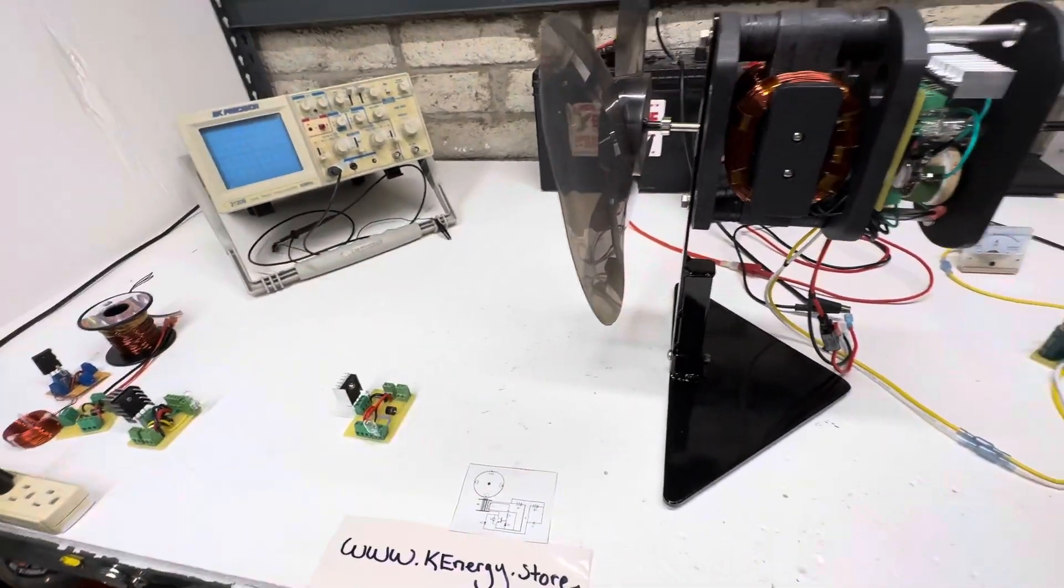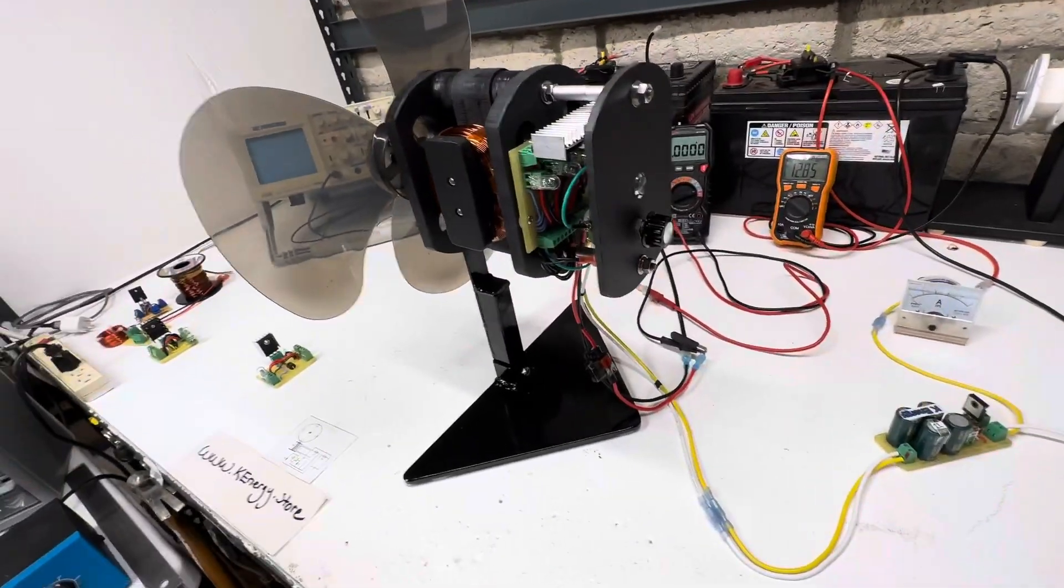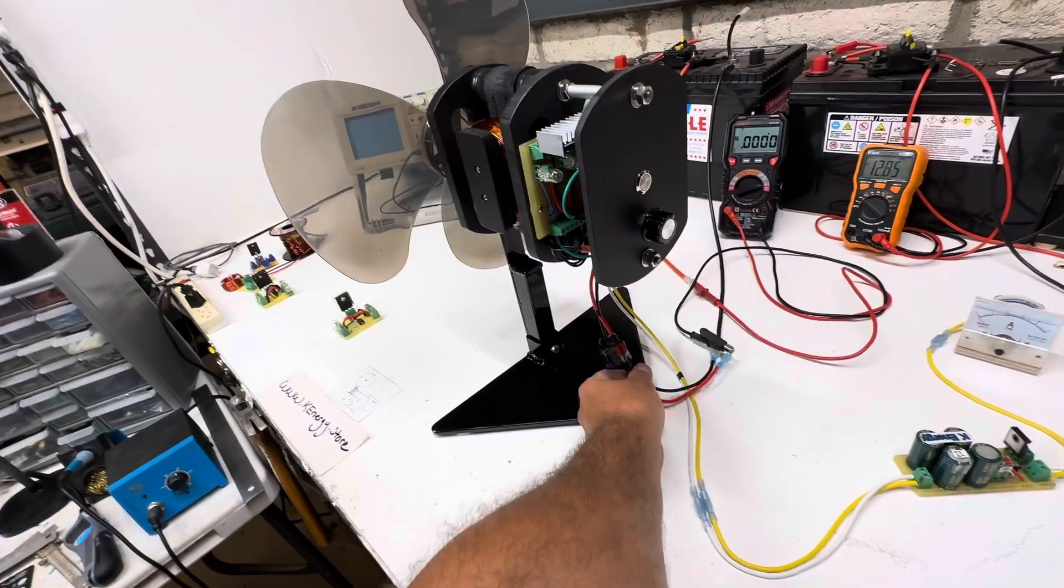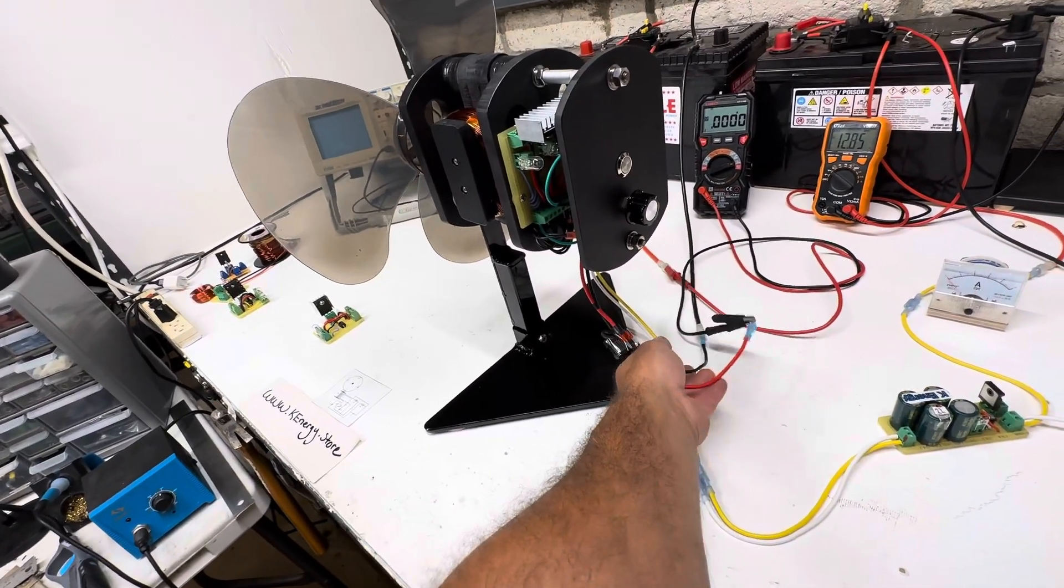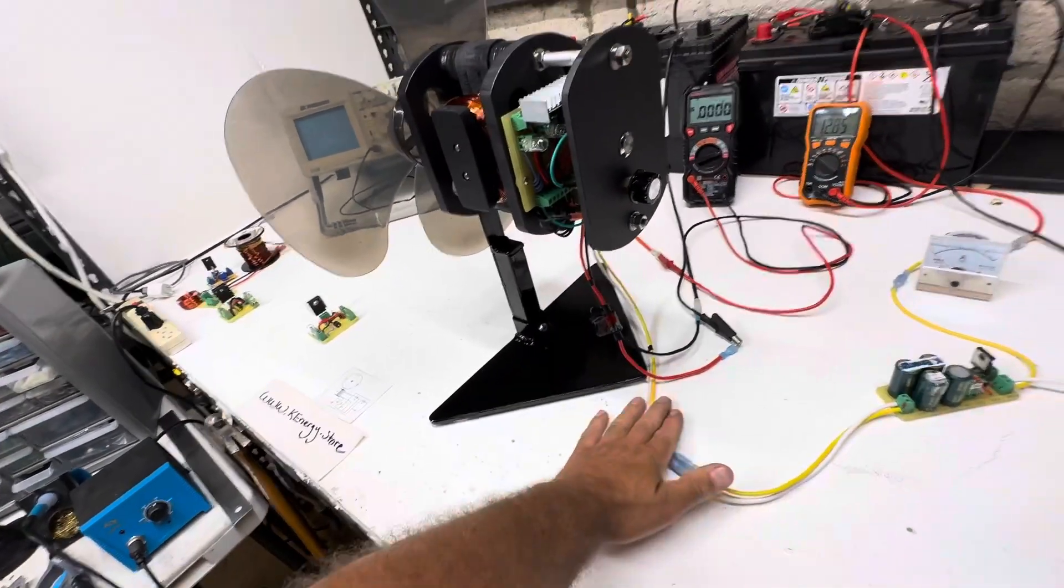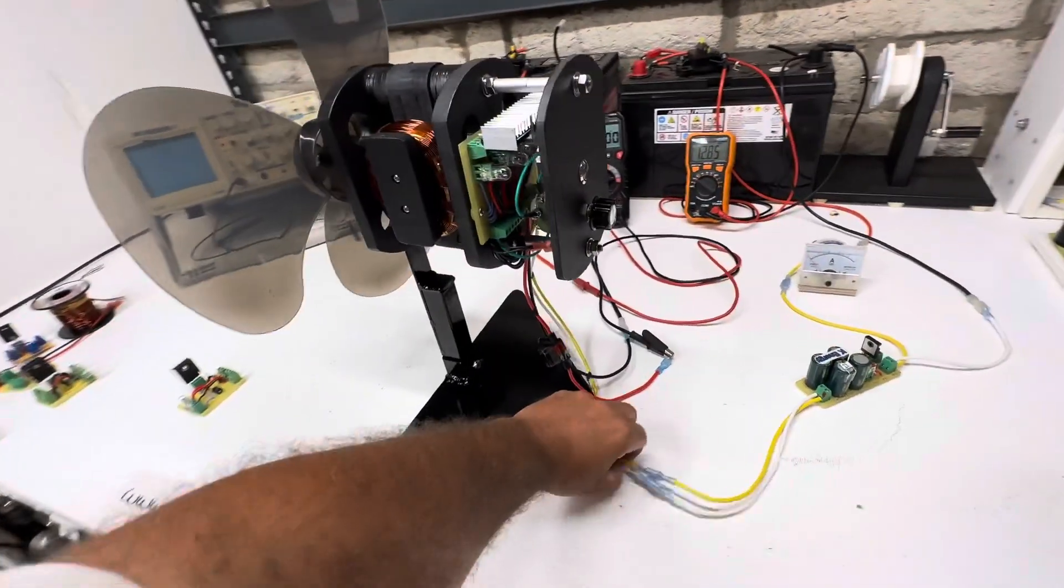So this is what basically comes with the motor. You have the 10 amp fuse, you know, the black and red. You have the yellow - this does not come with it, so it's just going to go to here.